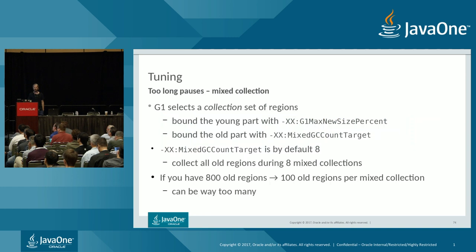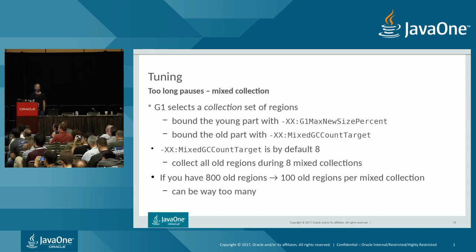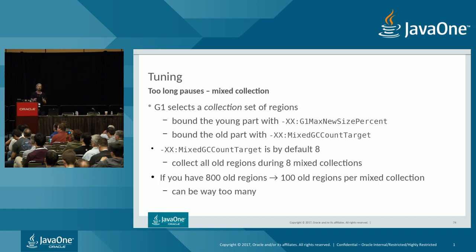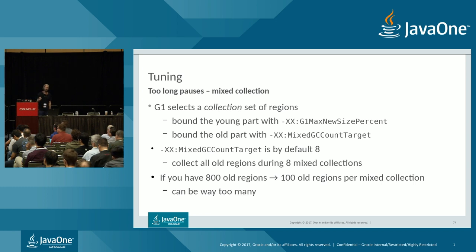G1 selects a collection set of regions — the young part bounded by -XX:G1MaxNewSizePercent and the old part bounded by -XX:G1MixedGCCountTarget. G1MixedGCCountTarget defaults to 8, meaning G1 tries to collect all old regions across 8 mixed collections. For lower latency, if you have 800 old regions on a large heap and a mixed GC count target of 8, you may end up with ~100 old regions per mixed collection — potentially far too many, causing very long pauses. In that case, increase G1MixedGCCountTarget.